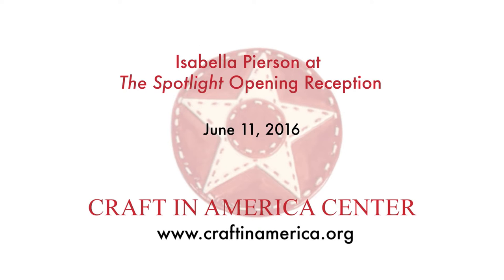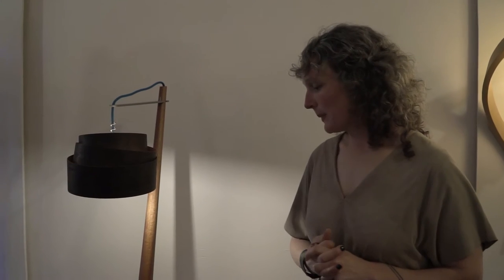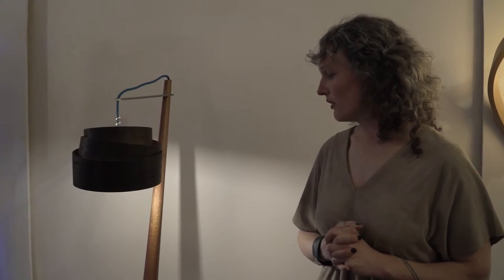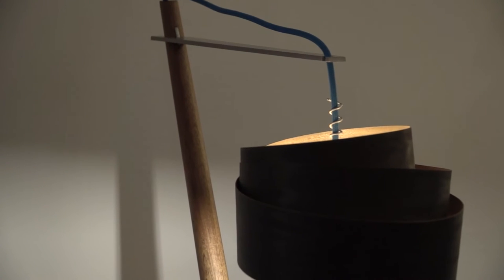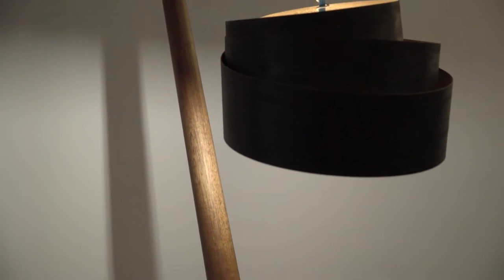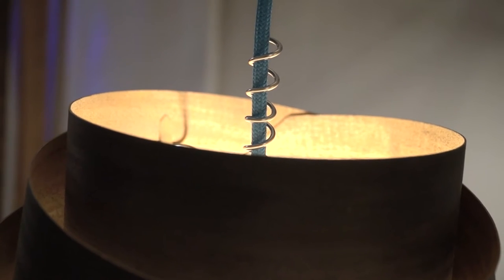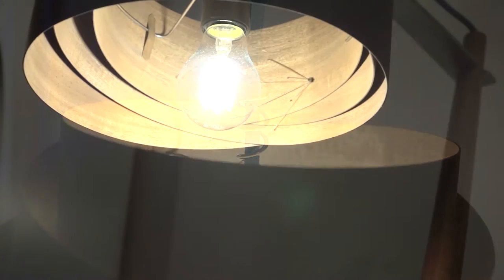My name is Isabella Pearson and I'm from Maine and the lamp that I made is out of mahogany. The body is mahogany. The shade is mahogany veneer that's been iron stained. On the outside it's still raw on the inside.